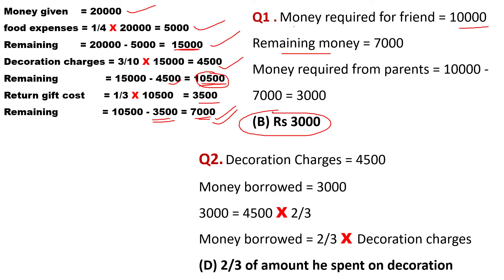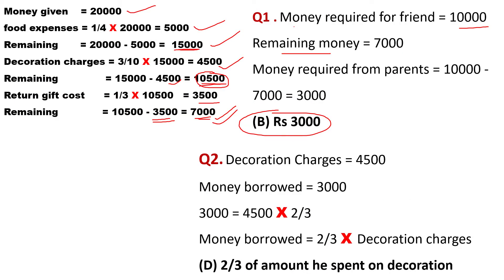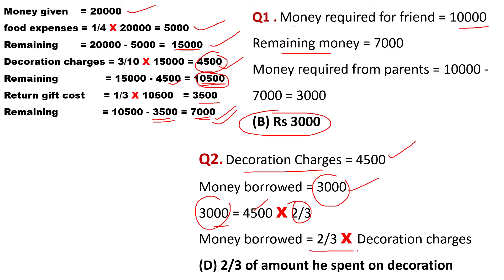This is a CCT-based PISA question — very good, requiring some reasoning and technical thinking. Question number two: the amount that Aryan borrowed from his parents was how much? Decoration charges are Rs 4,500. Money borrowed is Rs 3,000. This is two-thirds of the decoration charges: two-thirds of 4,500 = 1,500 × 2 = Rs 3,000. So this Rs 3,000 is two-thirds of the decoration charges. Option D is the correct answer.